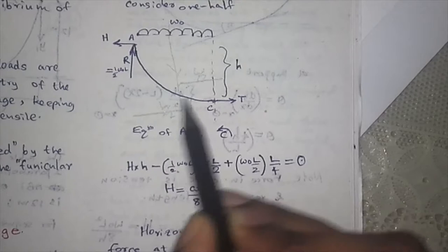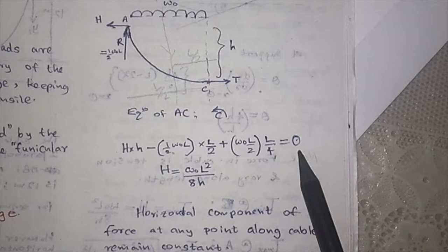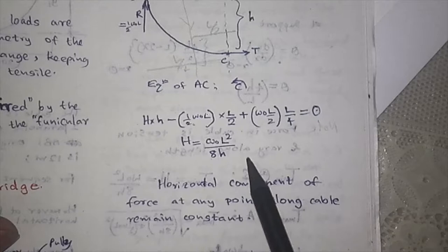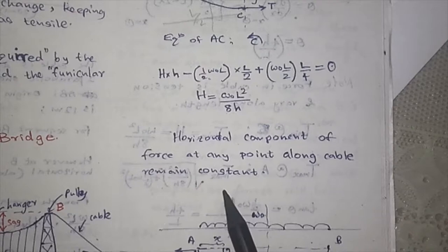So you have this moment. The moment should be for equilibrium equal to zero. Now you can determine H. H is W naught L squared over 8 simple H. Horizontal components of force at any point along cable remain constant.